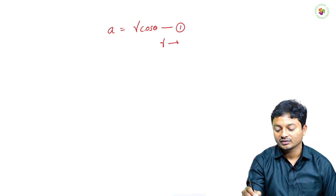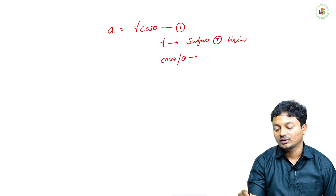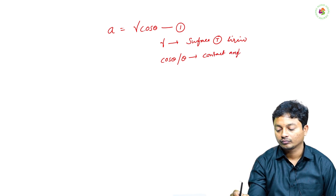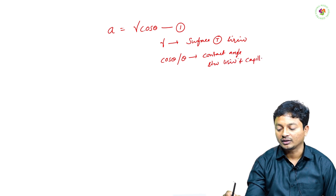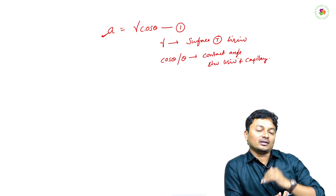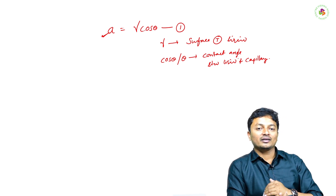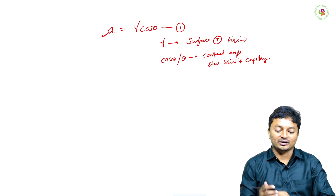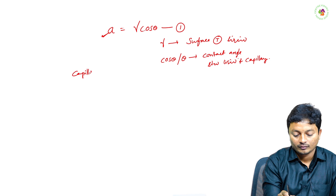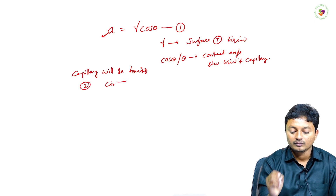Now consider the force acting during the upward direction along the circumference of the liquid, which is expressed as gamma cos theta — this is equation 1. Here, gamma is the surface tension of the liquid, and theta is the contact angle between the liquid and the wall of the capillary. This is for a single circumference; however, the capillary has two circumferences.